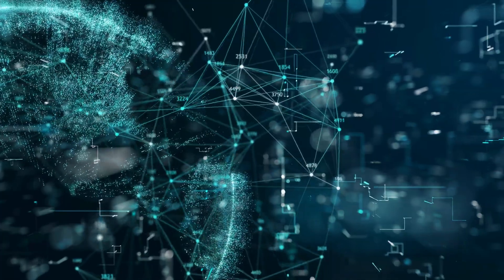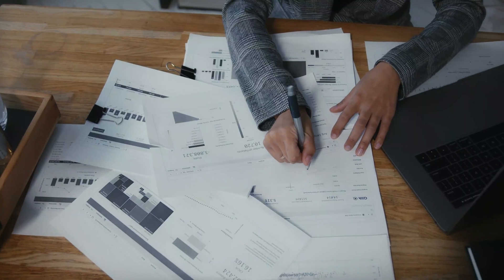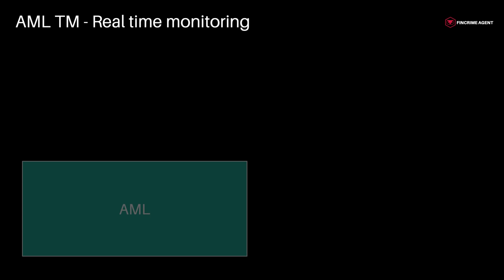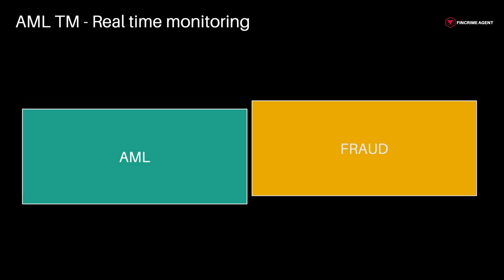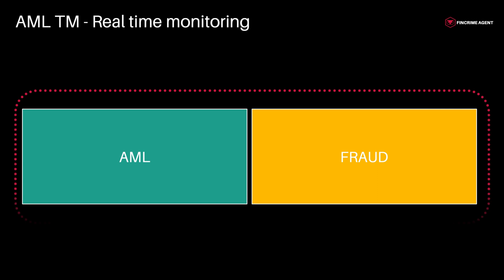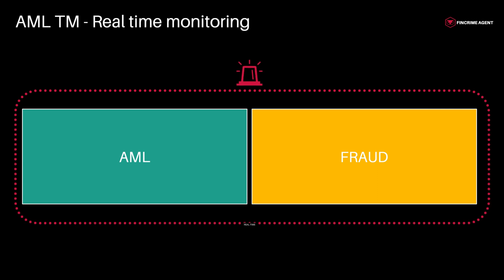These software applications efficiently track bank customer transactions, usually on a daily basis, and use customer history and account information to provide the big picture to bank management. More recently, AML Transaction Monitoring software allows regulated firms to also monitor customer activities in real time. These new functionalities are making the distinction between AML Transaction Monitoring and fraud prevention less evident, so regulated firms can benefit from a wider and more comprehensive view of financial crime risks presented to their compliance investigators.